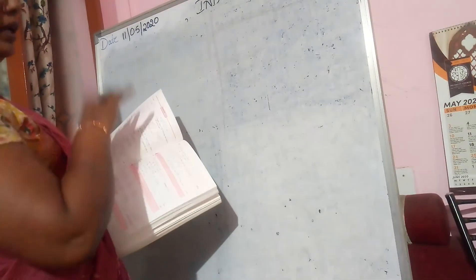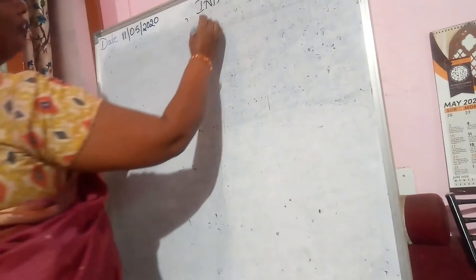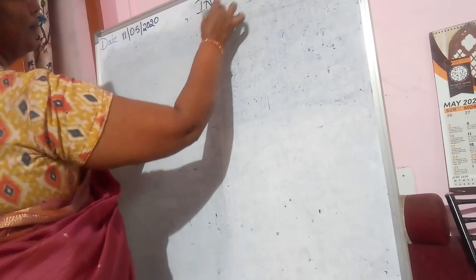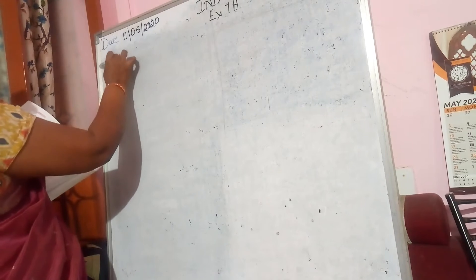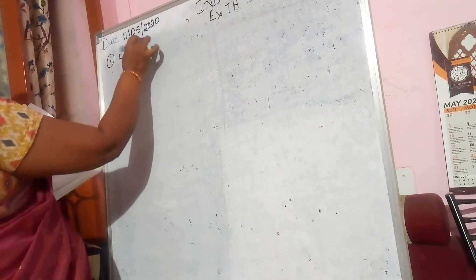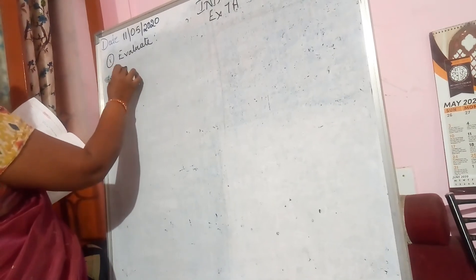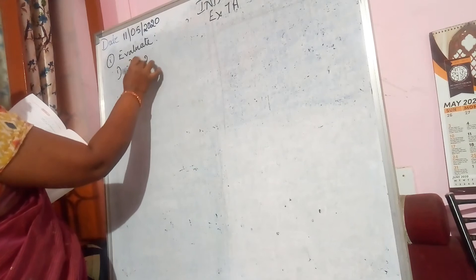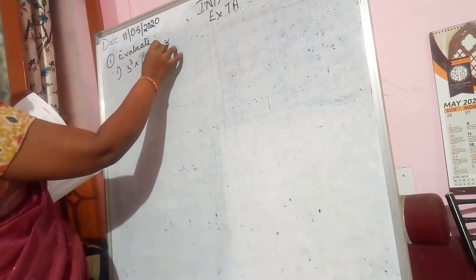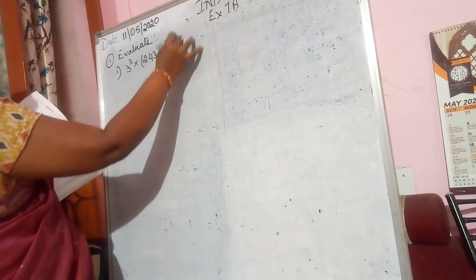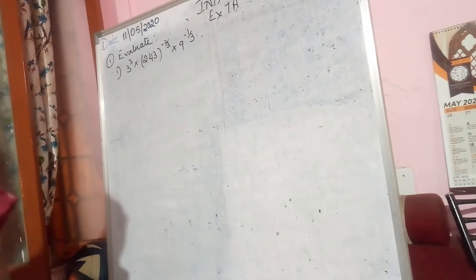You learn what I am teaching you now and then try to solve those sums. Let us see. Now the first exercise — it says evaluate. The first one is: 3 raised to the power of 3, multiplied by 243 raised to the power of minus 2 by 3, multiplied by 9 raised to the power of minus 1 by 3.